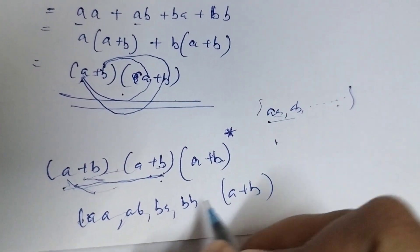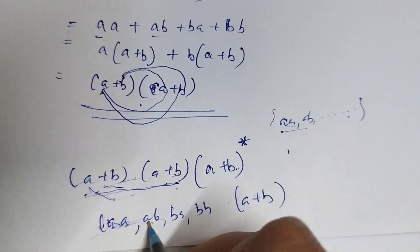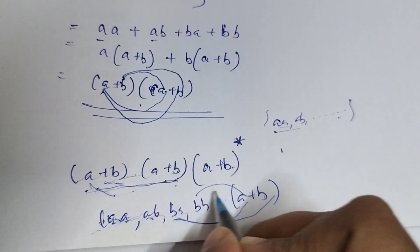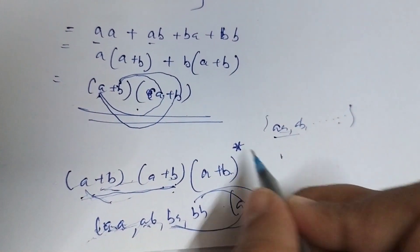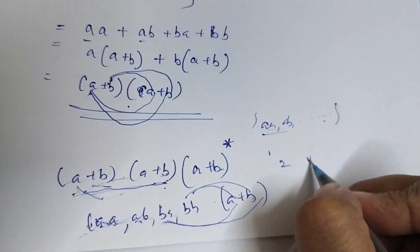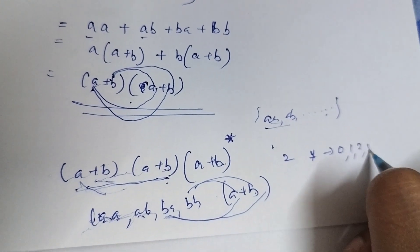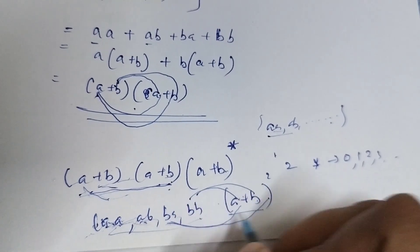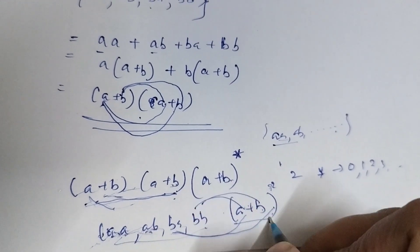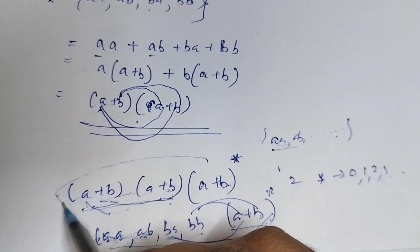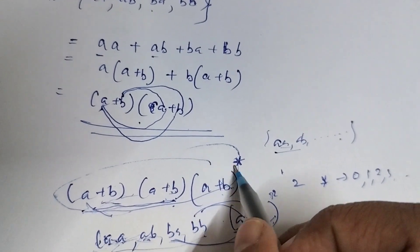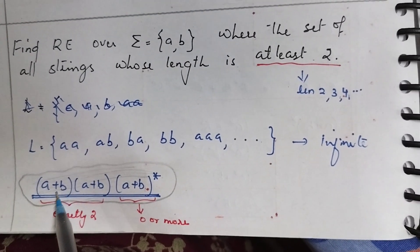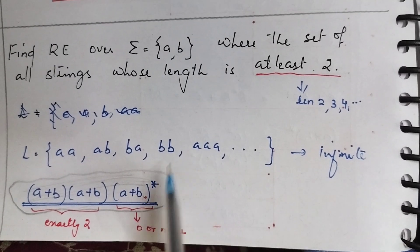Then (a+b) appended again gives strings of length 3. Star means 0 or more number of repetitions of (a+b). Star = 0 gives length 2; star = 1 gives length 3; star = 2 gives length 4; star = 3 gives length 5, and so on. So the regular expression for this problem is (a+b)(a+b)(a+b)* — which is (a+b)(a+b) for exactly 2, concatenated with (a+b)* for 0 or more additional characters.